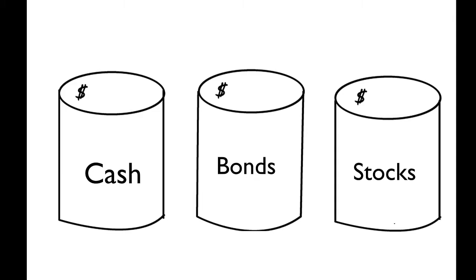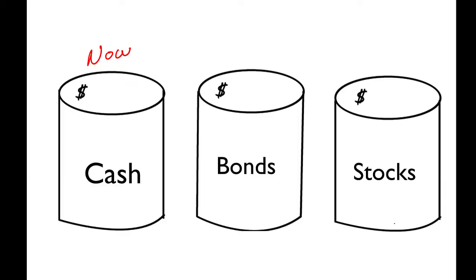Each bucket provides protection or income for a specific period of time. This first bucket we call the now bucket, because this is the bucket we use to put money into your account that you need every month once you retire. Just imagine: once you stop working, the paycheck stops. How are you going to pay your bills? Where's the money going to come from? Maybe some of it will come from Social Security, but that's not enough — some of it will have to come from your investments. We need to put enough money in your now bucket to cover the first 12 months of your retirement.